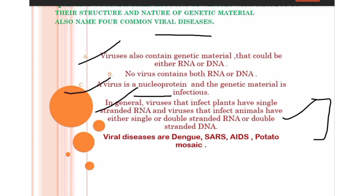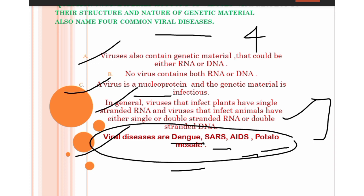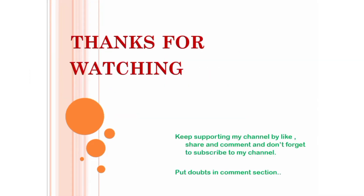Now the third point of this question — if you write the answer point-wise, you can understand and define it easily in your own way. Four common viral diseases: Dengue, SARS (Severe Acute Respiratory Syndrome), AIDS (Acquired Immunodeficiency Syndrome), and Potato Mosaic. So here is the end of our lecture — NCERT questions of Biological Classification are completed. Any doubts, put them in the comment section. Thanks for watching.